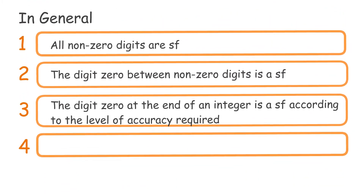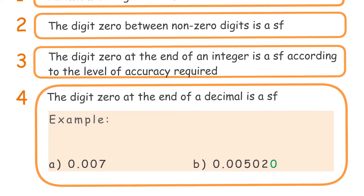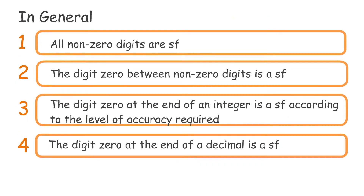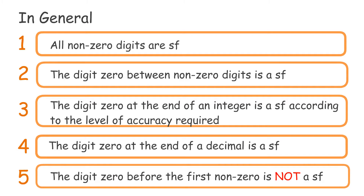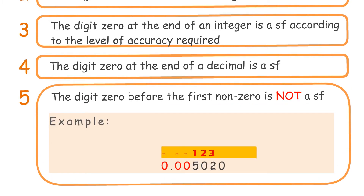Fourth, the digit zero at the end of a decimal is a significant figure, because it determines the level of accuracy of the decimal. Example: 0.007 — 1 significant figure; 0.005020 — 4 significant figures. Fifth, the digit zero before the first non-zero digit is not a significant figure. Example: 0.005020 — 4 significant figures.